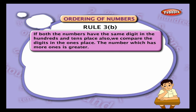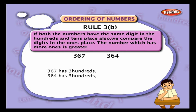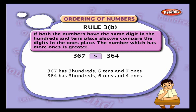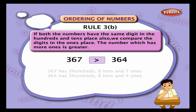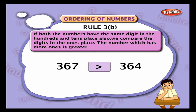Rule 3b: if both numbers have the same digit in the hundreds and tens place, we compare the digits in the ones place — the number with more ones is greater. For example, 367 and 364: both have three hundreds and six tens. 367 has seven ones and 364 has four ones, so 367 is greater than 364.